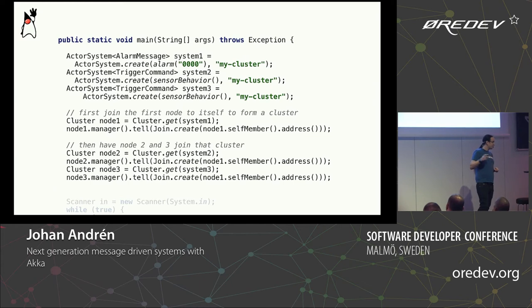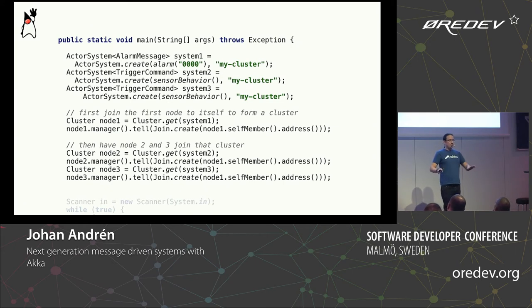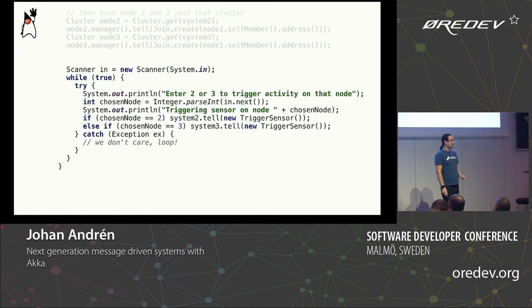Then we wire things up. This is actually the complete logic to form a three-node cluster running in the same JVM — three actor systems communicating with each other over TCP, all in code. Then a loop lets us put user input into our terminal to trigger activity and verify things work.